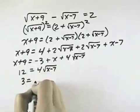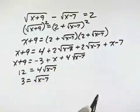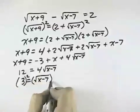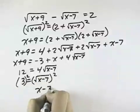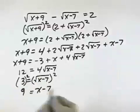Dividing by 4, I get 3 equals the square root of x minus 7. To get rid of this radical, I now square both sides again now that it's isolated, leaving just x minus 7 on the right and 9 on the left.